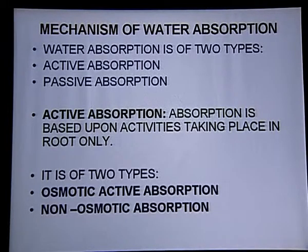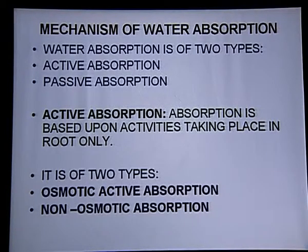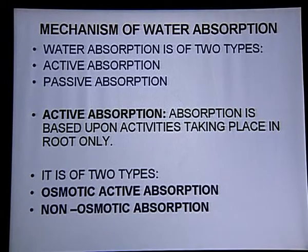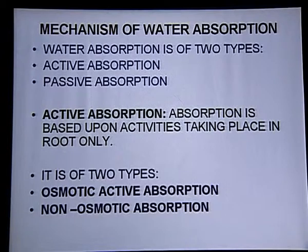Now let's come to our main topic: the mechanism of water absorption. How does absorption of water occur? How do root hairs absorb water from soil? There are two types: active absorption and passive absorption. In active absorption, the process is mainly based upon activities taking place in the root only. Any process occurring in the shoot or stem is not responsible for active absorption.